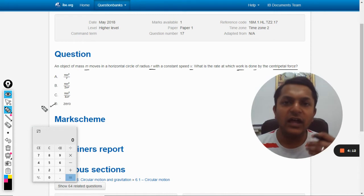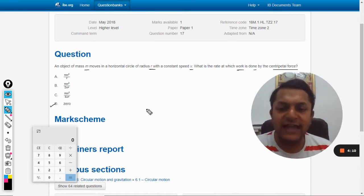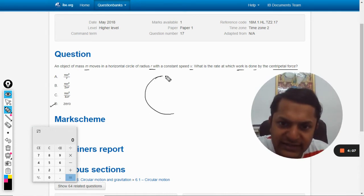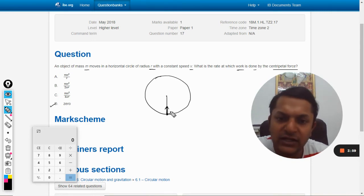Let us say this is the circle. So the centripetal force will be in upward direction towards the center. This is centripetal force. But the displacement vector is tangential.